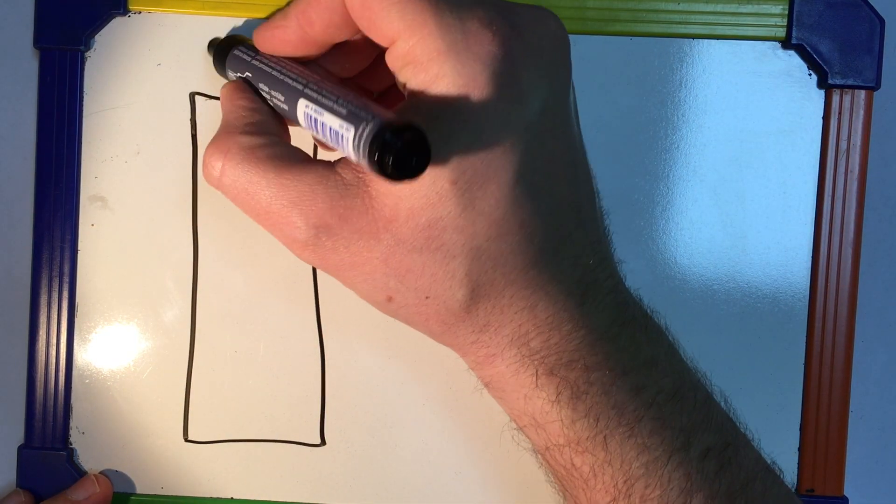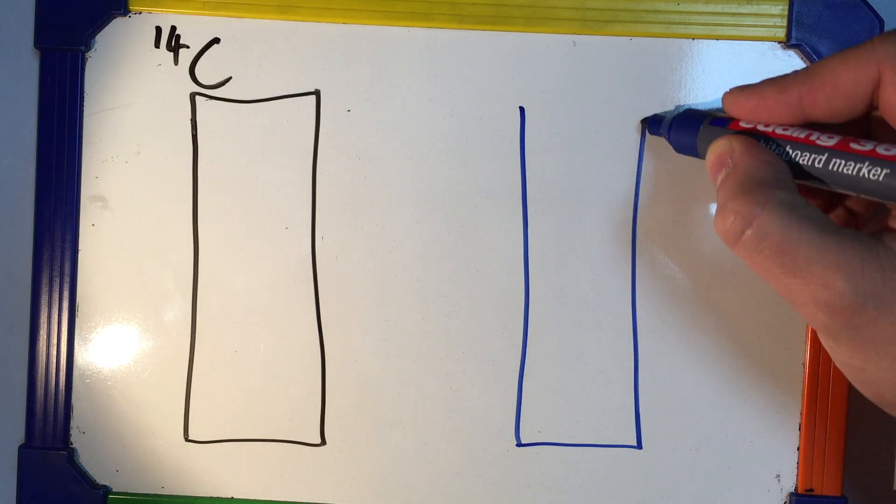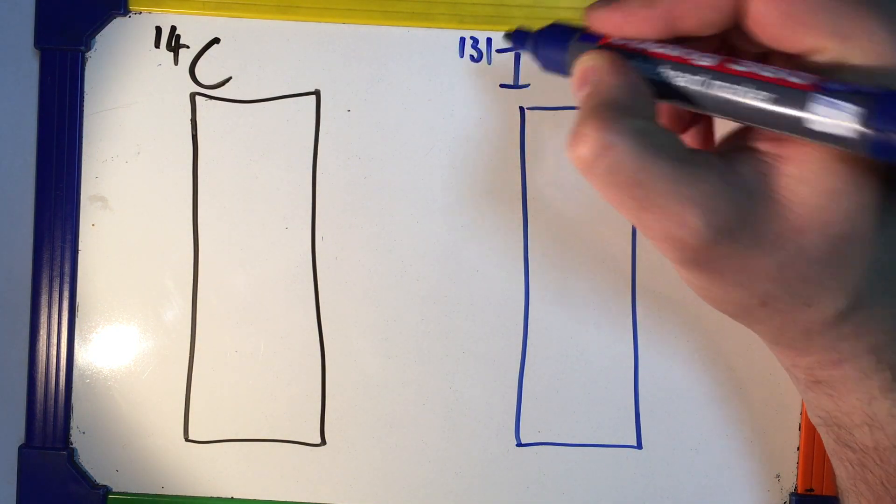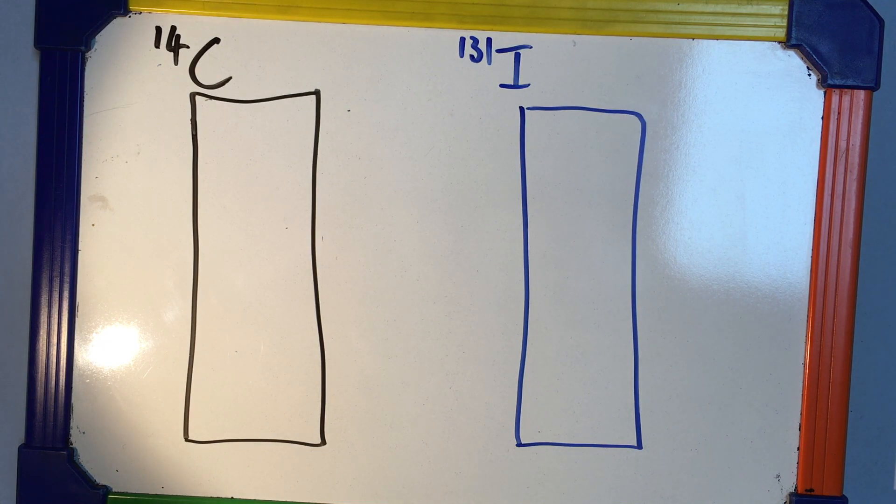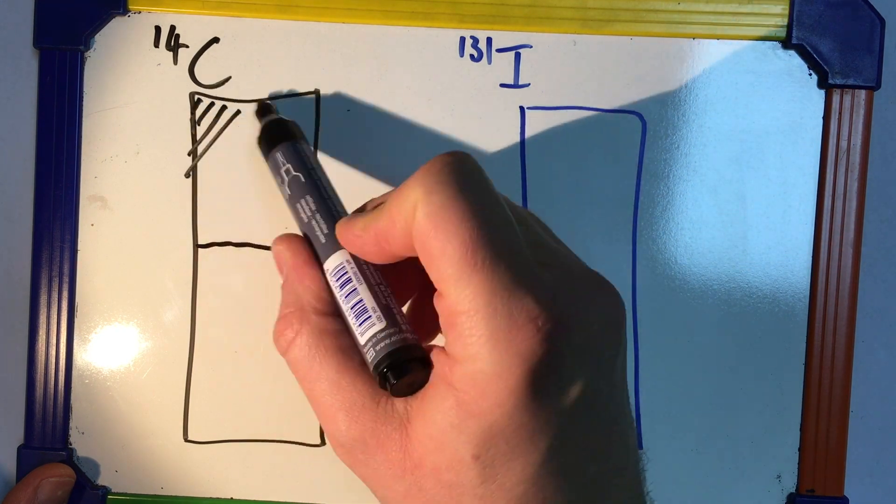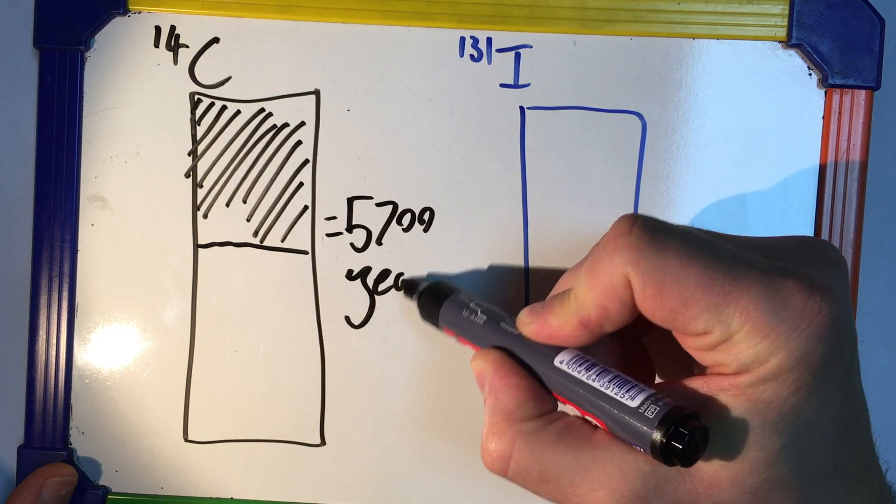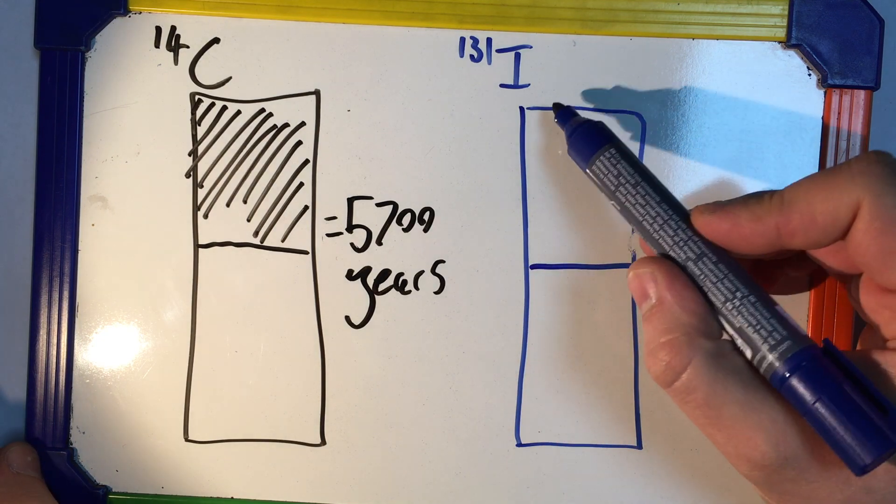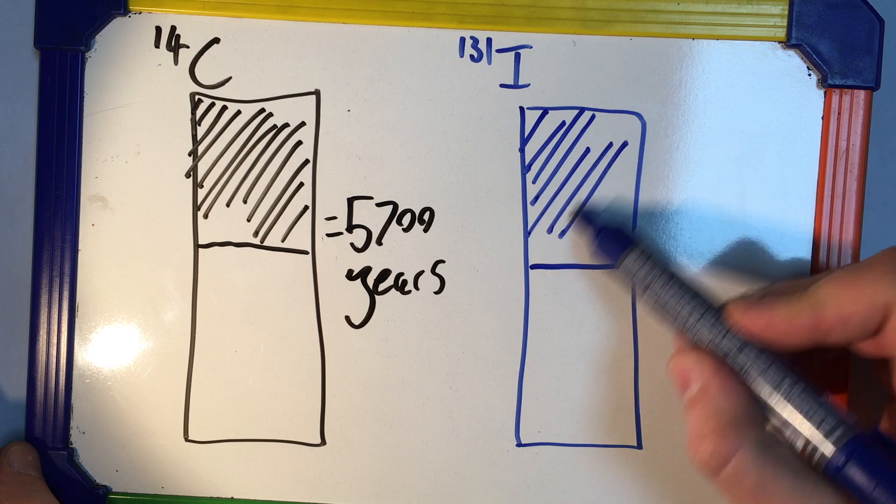So what would this look like in practice? Well let's imagine we've got two identical amounts of two different materials. We've got a kilogram of carbon-14 and a kilogram of iodine-131. It'll take 5,700 years for half of the carbon-14 to decay, whereas it'll only take 8 minutes for half of the iodine-131 to decay.